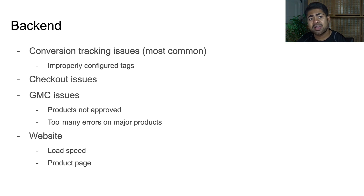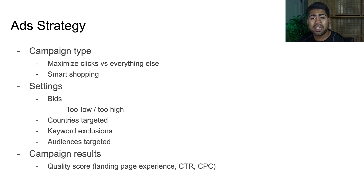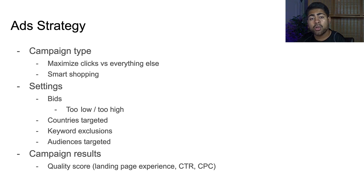But let's say you've done all of these things and you're still not getting the results that you want. This brings me now to the ad strategy side, because things might be a little bit deeper — there might be problems with the actual ads you are running. First thing that comes to mind is the campaign type. What kind of campaign are you running? Are you running a general testing campaign on maximize clicks, a manual CPC campaign with enhanced CPC, or a target ROAS campaign? You really want to make sure you're choosing the right campaign type.